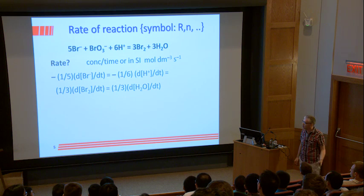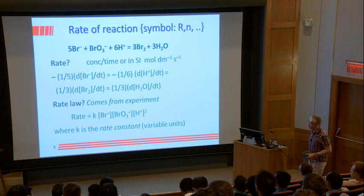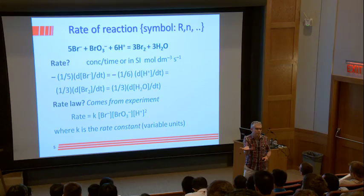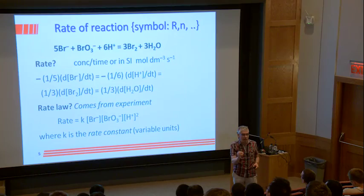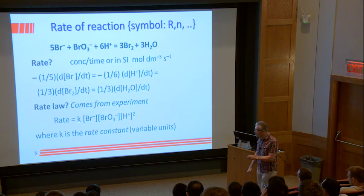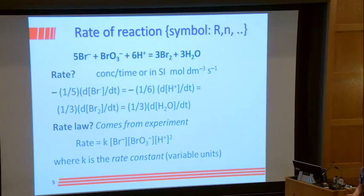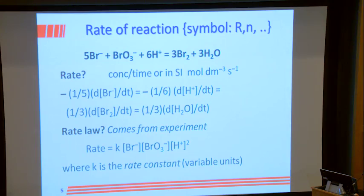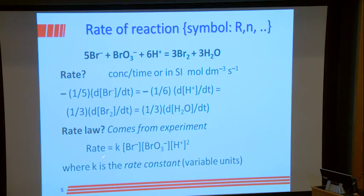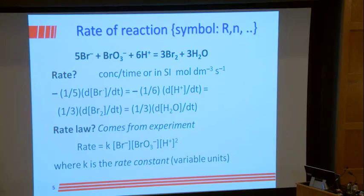The rate is equal to a rate constant times the concentration of Br⁻ raised to the power alpha, times BrO₃⁻ to the power beta, times H⁺ to the power gamma. Experimentally it was found that alpha = 1, beta = 1, gamma = 2. This is how we express the rate of reaction — the rate constant times concentrations of reactants raised to some power.